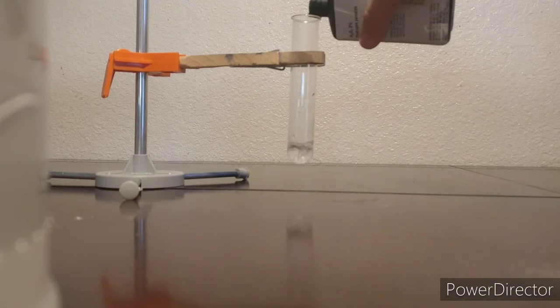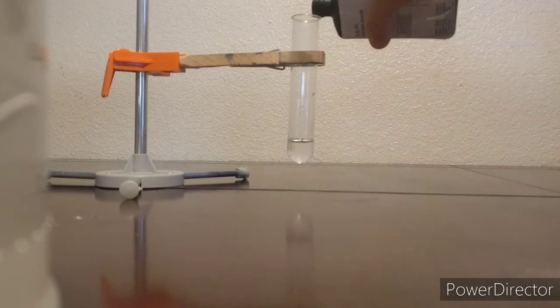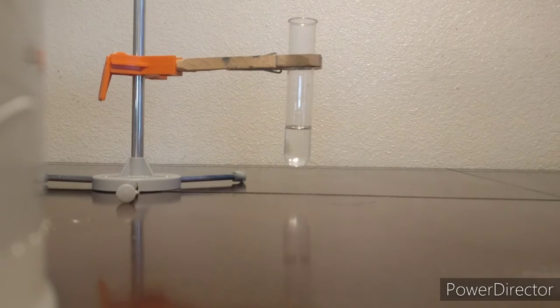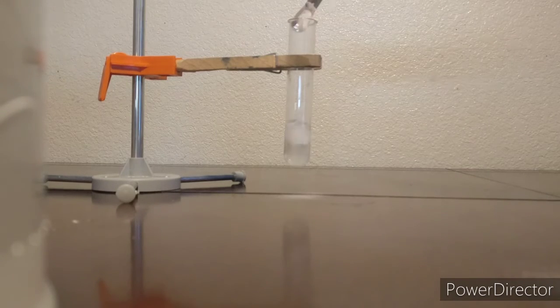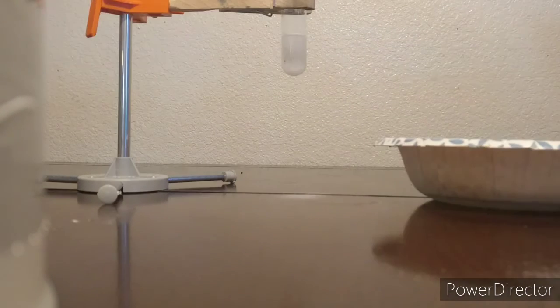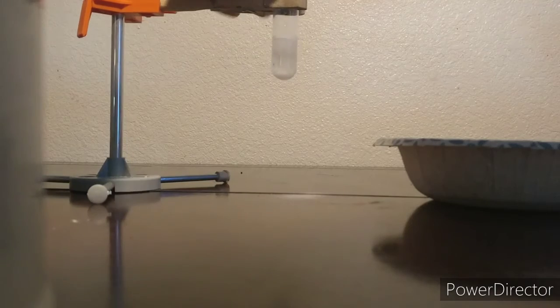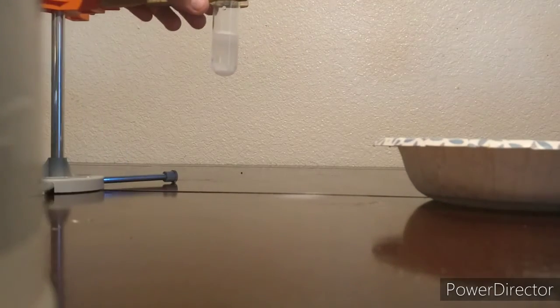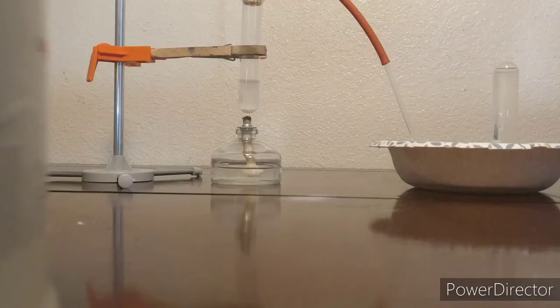For the second technique, I added five milliliters of hydrogen peroxide to the test tube. Then, I added one fourth a teaspoon of sodium carbonate to the hydrogen peroxide and mixed. Now, I assembled this apparatus and heated up the mixture. I personally used a Bunsen burner, but you can use a heating mat if necessary.